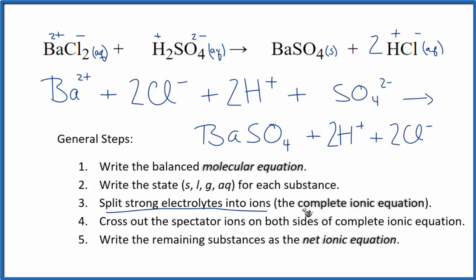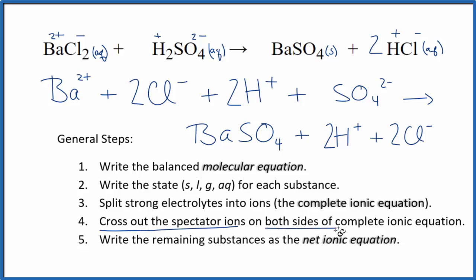So this is what's called the complete ionic equation, sometimes called the total ionic equation. So now we can cross out the spectator ions. These are on both sides of this complete ionic equation. So we have Ba2+, but we don't have that in the products. 2Cl- in the reactants and in the products, so we can cross that out. We also have 2H+ here in the reactants, and 2H+ in the products. Cross them out. That leaves us with the net ionic equation.